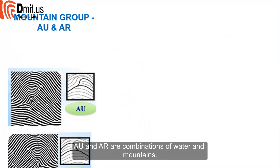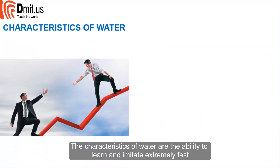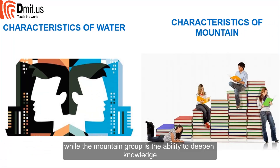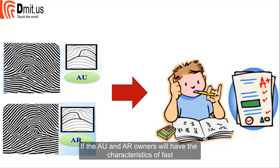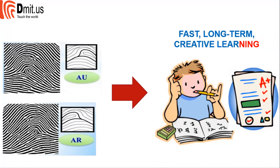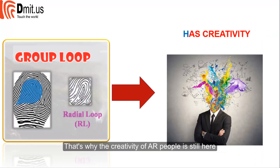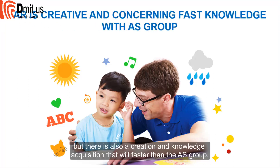The AU and AR groups are combinations of water and mountain. The characteristics of water include the ability to learn and imitate extremely fast, while the mountain group deepens knowledge. AU and AR owners will have the characteristics of fast, long-term, creative learning. The AR group is the reverse water — reverse water brings creativity, which is why the creativity of AR people is strong. They contain extremely deep knowledge, but also have faster creative and knowledge acquisition than the AS group.